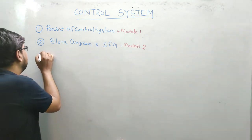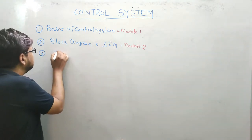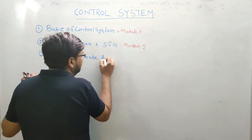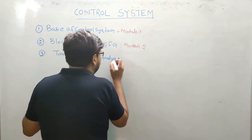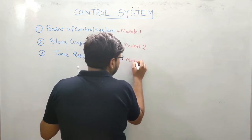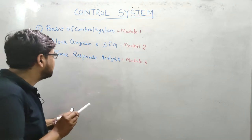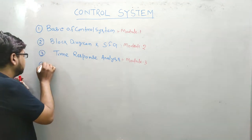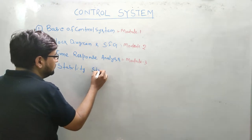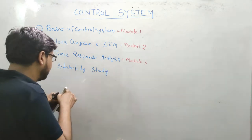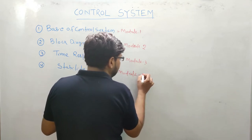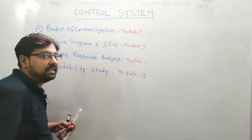वो खत्म होने के बाद, number 3 में आएगा मेरा Time Response Analysis. Time Response Analysis को हम लोग खत्म करेंगे Module 3 में. Time Response के बाद हम लोग का आएगा Stability - Stability Study. तो Stability Study हम लोग खत्म करेंगे Module 4 में. वहाँ पर हम लोग Stability में Routh-Hurwitz Criteria देखेंगे और Routh-Hurwitz Stability यहाँ पर discussion करेंगे Stability Study में.